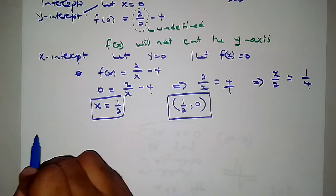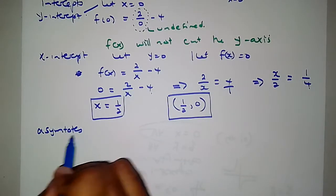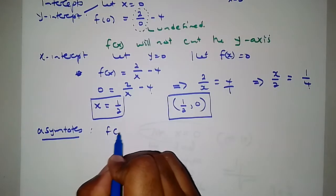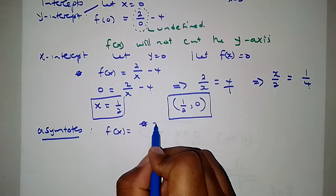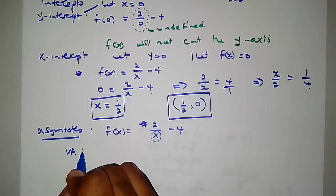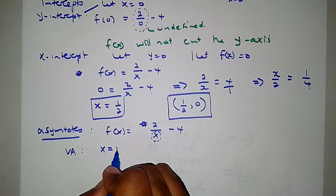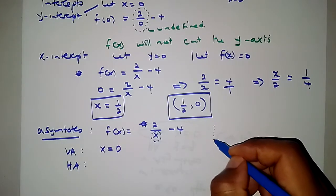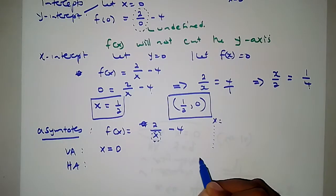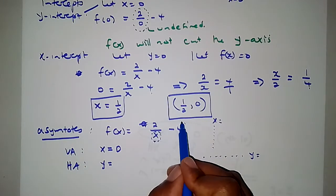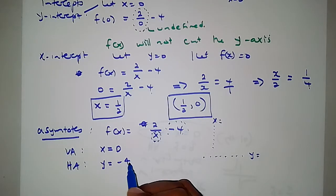Now let's look at asymptotes — the imaginary lines that the graph approaches but never touches. For f of x equals 2 divided by x minus 4, the vertical asymptote is x equals 0. The horizontal asymptote is y equals q. Our q is negative 4, so the horizontal asymptote is y equals negative 4.